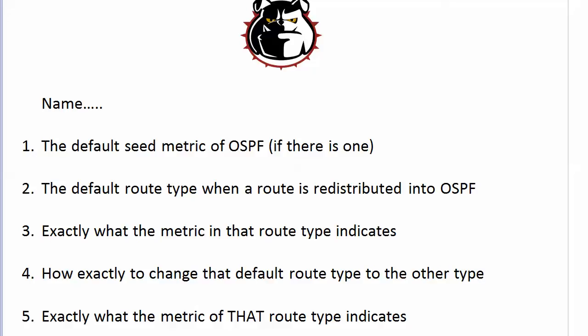I need you to name, first off, if there is a default seed metric for OSPF, tell me what it is. Next, tell me what the default route type is when a route is redistributed into OSPF.